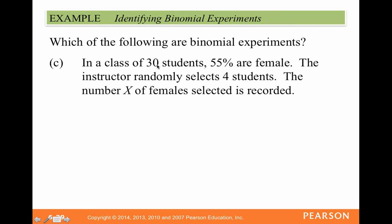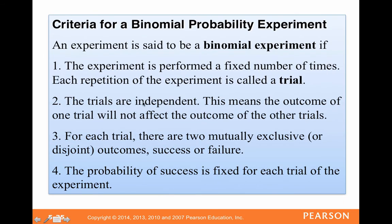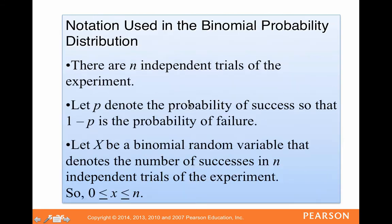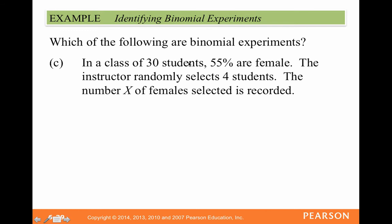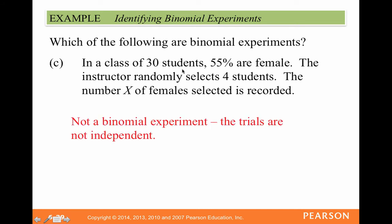This next one says: in a class of 30 students, 55% are female. The instructor randomly selects four students and the number of female students is recorded. This is very close to being binomial, but it's not. We do have a fixed number of trials — selecting four students — but the trials are not independent. When we sample from a small group of 30 people, if we randomly select one student, the probability of getting a female changes because now we're selecting from 29 students, not 30.